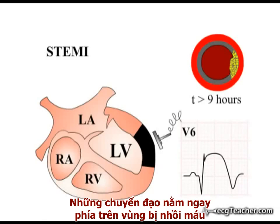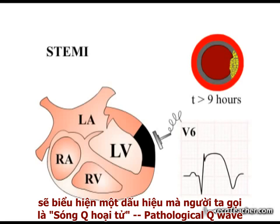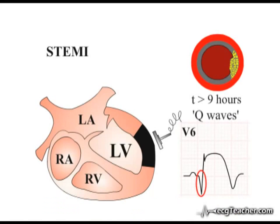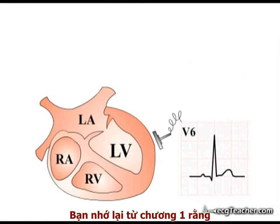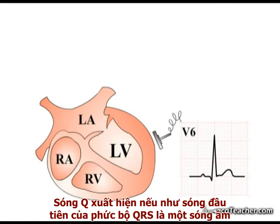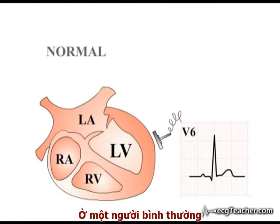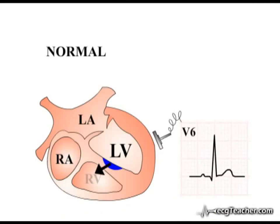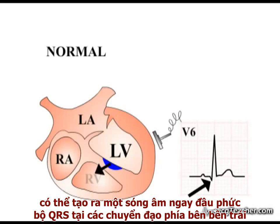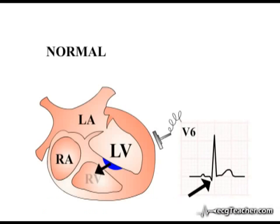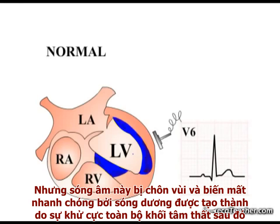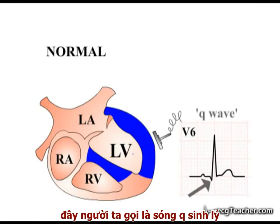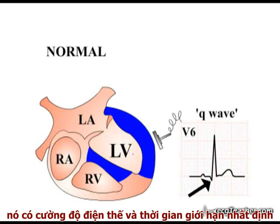The ECG leads looking directly at the infarction may develop an abnormality termed pathological Q waves. You will remember from section 1 that a Q wave exists if the first deflection of the QRS complex is negative. In a normal person, the left to right movement of current during depolarization of the interventricular septum can produce an initial negative deflection in the QRS complex in the left lateral leads, but this negative activity is rapidly overwhelmed by current spreading through the left ventricle. This is a physiological Q wave — it is limited in magnitude and duration.